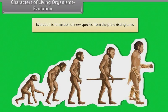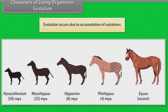Evolution is formation of new species from the pre-existing ones. Evolution occurs due to accumulation of variations.